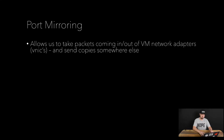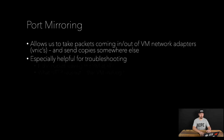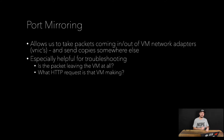So what is port mirroring? Port mirroring ultimately allows us to take packets coming in and out of our VM network adapters, also known as VNICs, and send copies of those packets to somewhere else. This can be really, really helpful, especially in terms of troubleshooting — for example, do we even have packets leaving the VM, what kind of HTTP request is that VM making, or is it making one at all? So we can see, kind of under the hood, what is happening from a network standpoint.